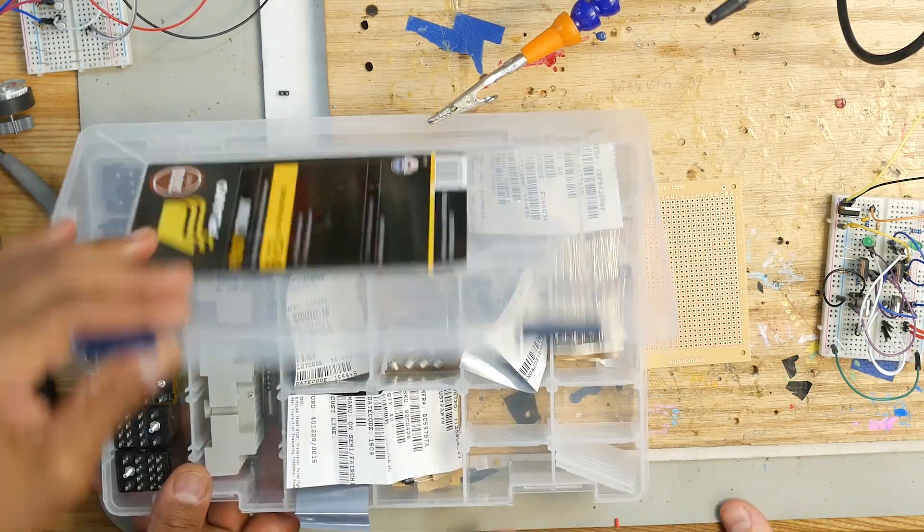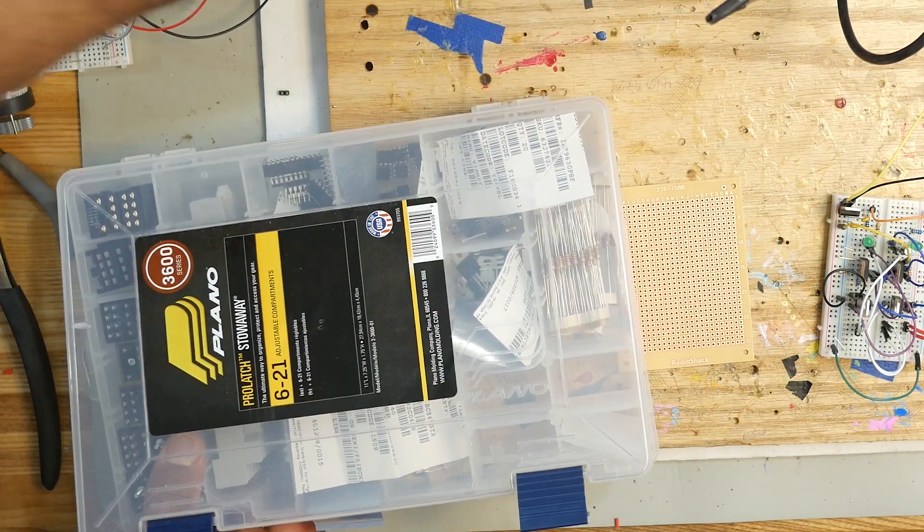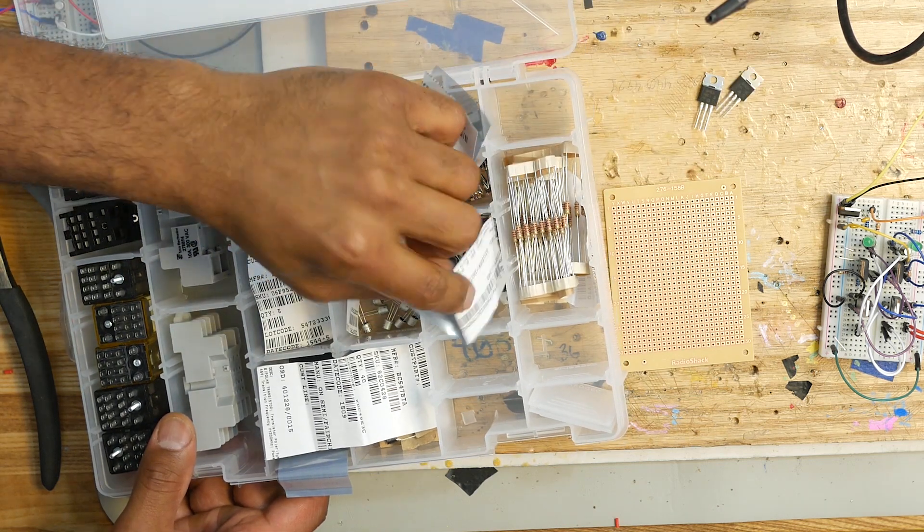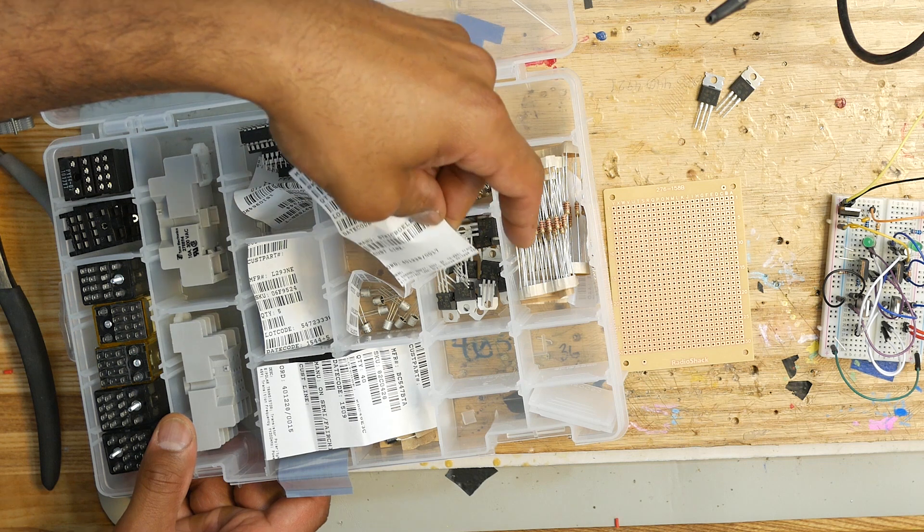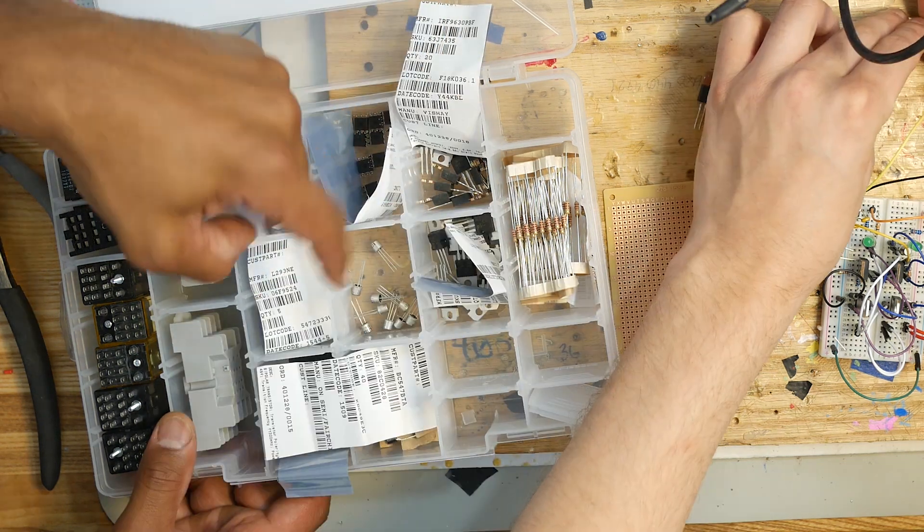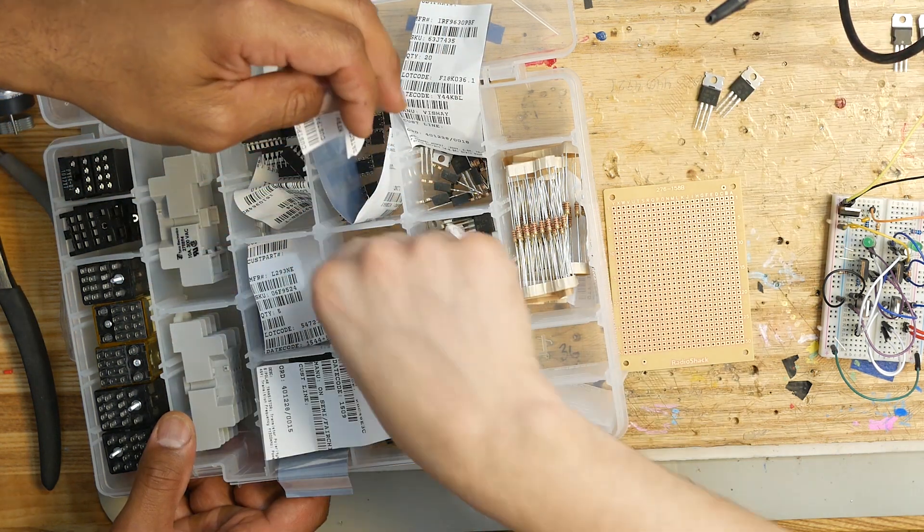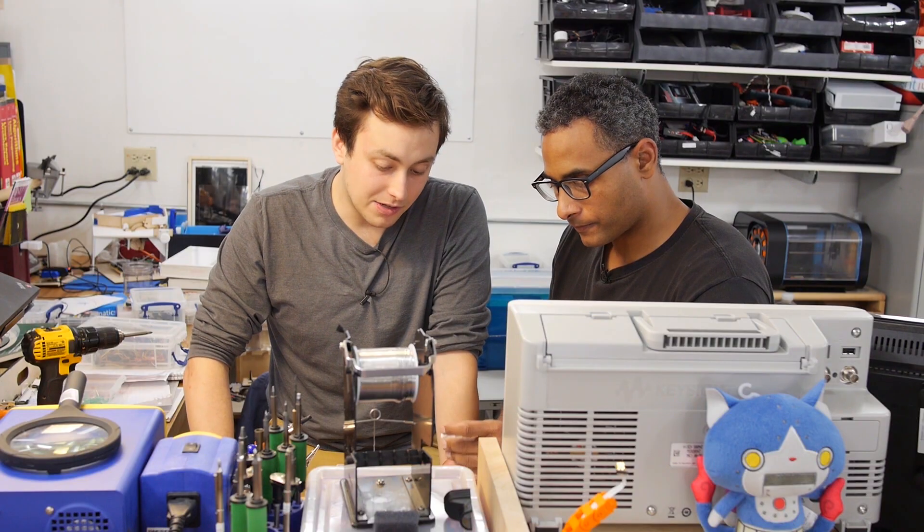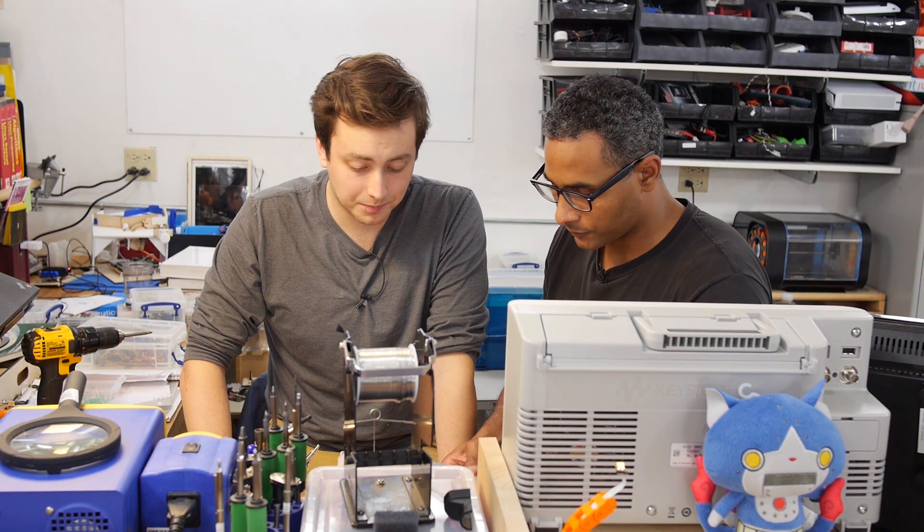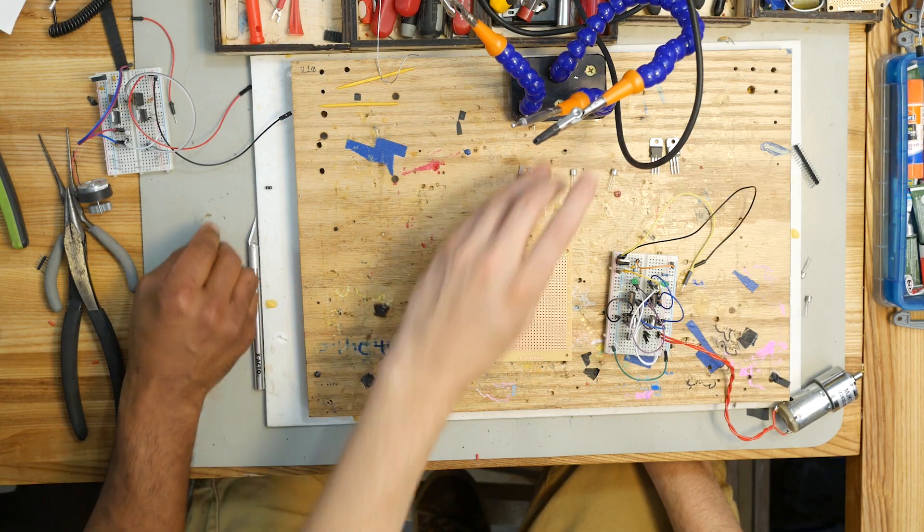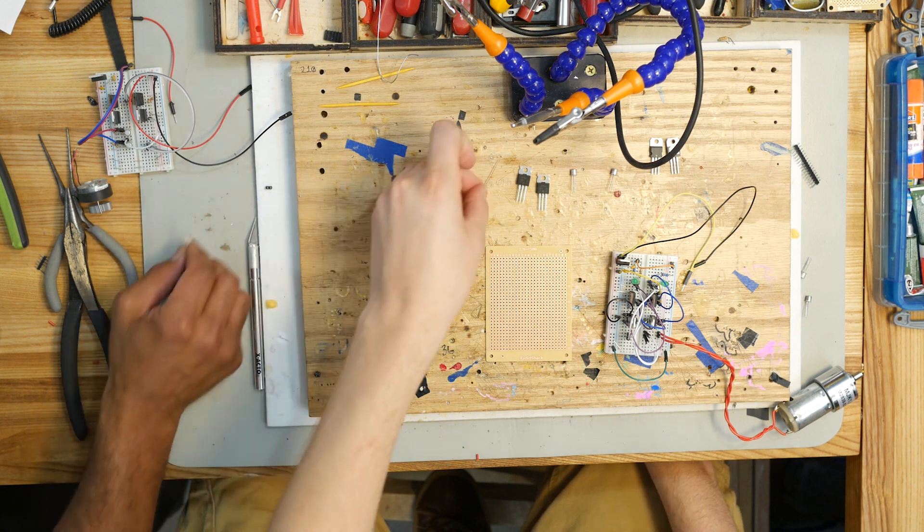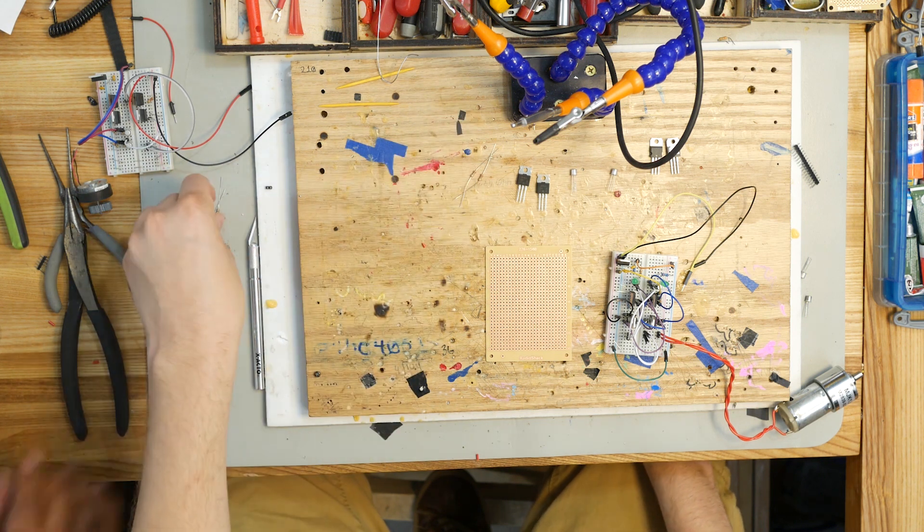And then two N-channel MOSFETs, IRF630, and we're going to need some resistors and a few other components. So what does an H-bridge do? What an H-bridge does, it takes a voltage and it reverses the voltage sent to the different terminals of a motor, so we can turn it in one direction, stop it, turn it in the other direction.